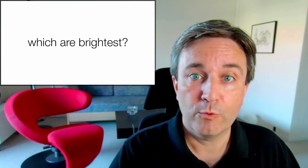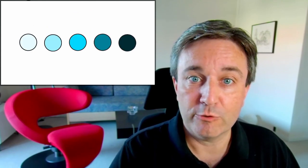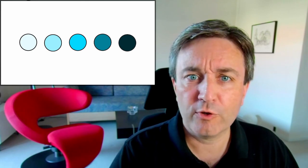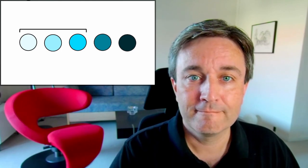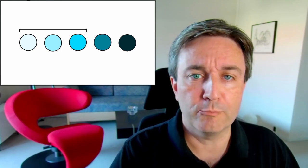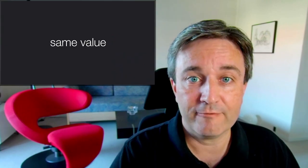So let's play a game. Which are brightest? Here are five circles. And I guess we can all agree that they are organized from the brightest on the left to the darkest on the right. But according to HSV, the three on the left are all equally bright. They have the same value.